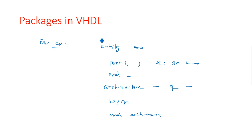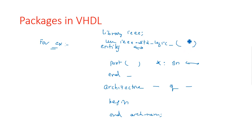Before writing programs, we have to initialize a library. The library we use is IEEE. We write: use IEEE.std_logic_1164.all. If you are using arithmetic operations, you use arith.all. For logical and XOR operations, you use the 1164.all package. Depending on the type of coding you are writing, you initialize the corresponding IEEE library.